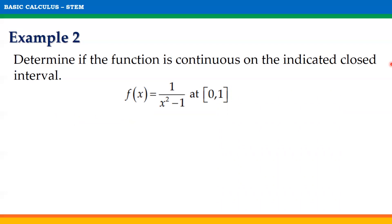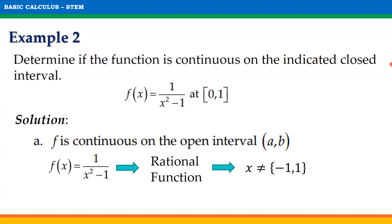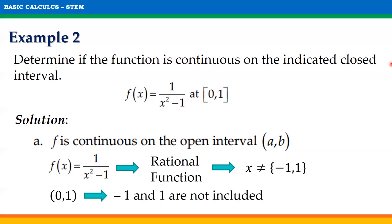Let us have another example. Determine if the function f(x) = 1 over (x squared minus 1) is continuous on the closed interval [0, 1]. To determine this, the conditions must be satisfied. For the first condition, f must be continuous on the open interval (0, 1). Since this is a rational function, the denominator cannot equal 0, so x cannot equal negative 1 or 1. Since negative 1 and 1 are not included in the open interval (0, 1), the function is continuous on this open interval. The first condition is satisfied.